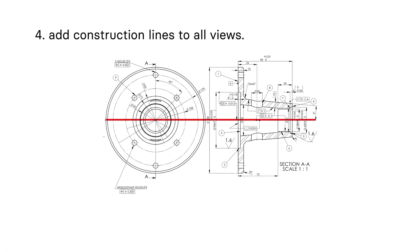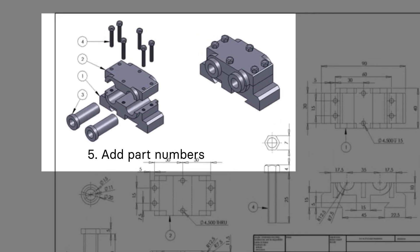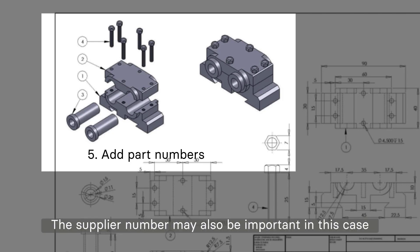Tip number four, add construction lines to all views, such as center lines, center marks, and center mark patterns, to define the location of the center of holes or circular patterns. Tip number five, add part numbers to your engineering drawing if there is a need for hardware installation. The supplier number may also be important in this case.